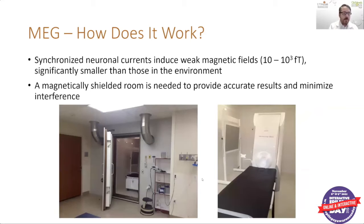Synchronized neuronal currents produce a weak magnetic field, significantly smaller than the magnetic field in the surrounding environment. Cell phones, computers, anything electronic produces a magnetic field much larger than those produced by the brain. The way we record these magnetic fields despite this is to use a magnetically shielded room. Here in the picture you can see our MEG at our institution — the magnetically shielded room, the giant door, the table, and where your head is placed within the scanner.